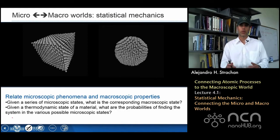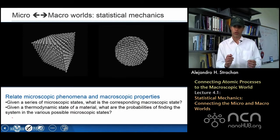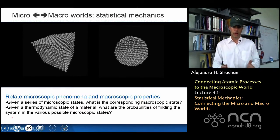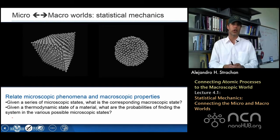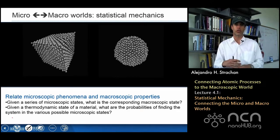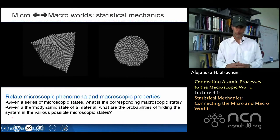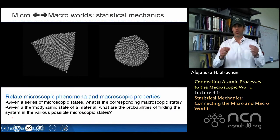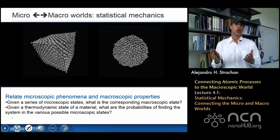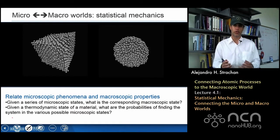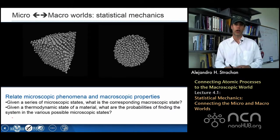Our goal for this week is relating the microscopic world to the macroscopic world. Given a series of microscopic configurations like what you see here from MD simulations, what is the macroscopic state that they belong to? From MD I know the position and the velocities of atoms as a function of time — to what thermodynamic conditions do those states belong? What is the temperature, for example, at which these two materials melt?